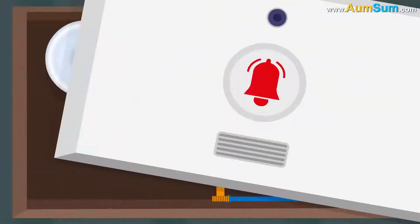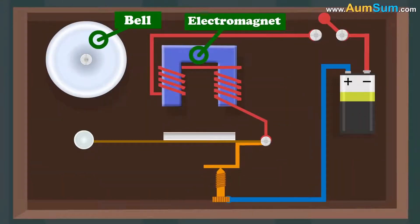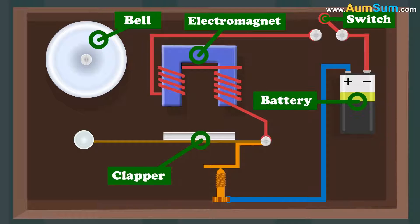An electric bell consists of a bell, an electromagnet, switch, battery, clapper and a coil.